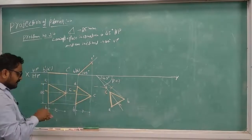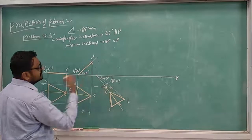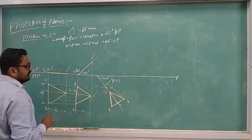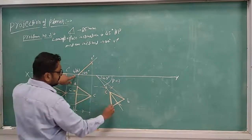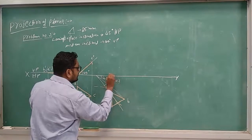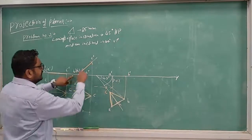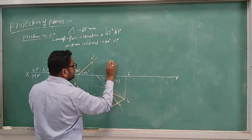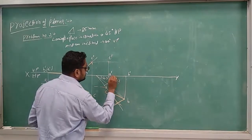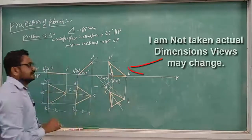Now draw projection lines to get the final front view. A-dash is on the XY line — draw the projection up to there and get A-dash. B-dash is also on the XY line — drop to there and get B-dash. Then get C-dash. Join all these points: A-dash to B-dash, B-dash to C-dash, and back to A-dash. The final front view is complete.